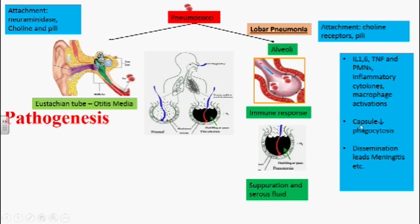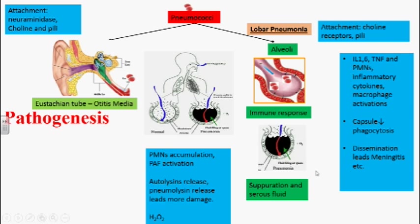These organisms restrict phagocytosis during that condition by using the capsule, which inhibits C3b activity so phagocytosis will not occur. Because of increased permeability, these organisms can enter into the blood circulation. Whenever they enter the bloodstream, there is a high increased chance of getting meningitis. Meningitis is mainly caused by hydrogen peroxide and pneumolysin released by these organisms. Autolysins release causes pneumolysin release, leading to more damage and suppuration in the tissue. Pneumolysins and hydrogen peroxide released into the bloodstream help this organism in causing meningitis.